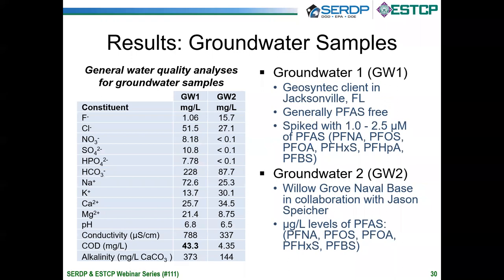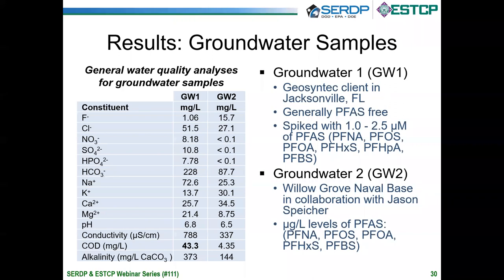Once we had proof of concept in synthetic solutions, we moved to groundwater samples. Groundwater one was obtained from GeoSynTech from a client in Jacksonville, Florida — generally a PFAS-free sample that we spiked with micromolar concentrations of six PFAS compounds. Groundwater two was obtained from Wibble Grove Naval Base in collaboration with Jason Spiker, containing microgram per liter levels of five PFAS compounds. A key difference was that the COD level was much higher for groundwater one — 43 milligrams per liter — relative to groundwater two at 4.4 milligrams per liter.